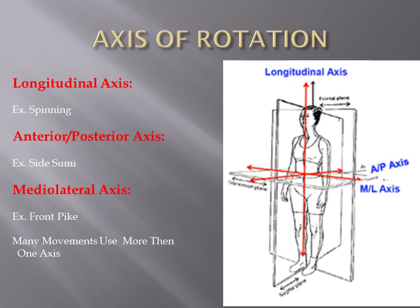You've got your longitudinal axis, which is your spinning. This aligns with your transverse plane — as you're spinning, you're moving the transverse plane and spinning about the longitudinal axis. You've got your anterior-posterior axis, which goes right through your belly button — this is your cartwheel axis. For a side somersault or cartwheel, even a roundoff depending on how you do it, you'll go through this axis.